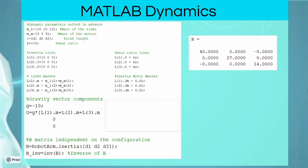Under MATLAB, we can give link masses, inertial links, gear ratio links, inertial motor masses, and so on, like shown in the code. Then, we implemented, thanks to the Peter Corke inertia command, the B matrix. And, as we expected from the theory, it is a constant diagonal matrix, which is independent on the configuration.